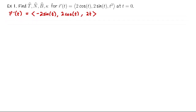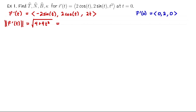Let's plug in t equals 0 to get the velocity vector at that particular moment. The general velocity vector is (-2 sine t, 2 cosine t, 2t), and at t equals 0 our velocity vector is (0, 2, 0). The speed in general is the square root of 4 sine² plus 4 cosine² plus 4t², which simplifies to 2 times the square root of 1 plus t². At t equals 0 the speed is 2.